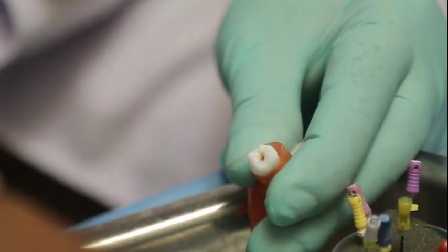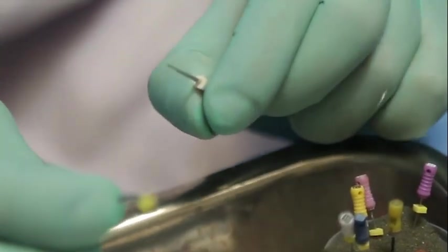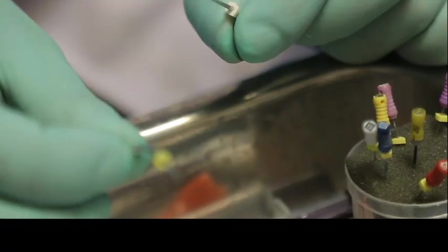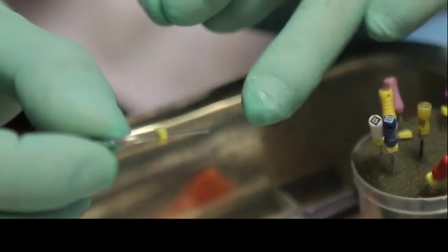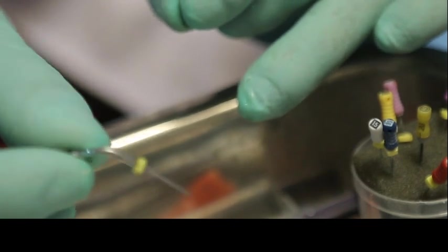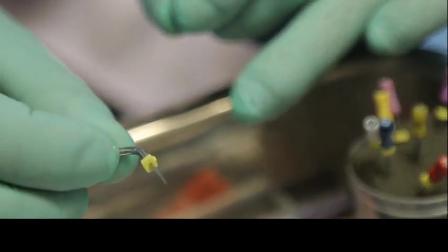Now for ultrasonic compaction usually I use these two tips. This one is E5 tip. E5 tip is from Woodpecker or EMS. Its working portion is only having about 15mm length. So usually for molars it will be sufficient. If it is a very long canal you can use this tip.